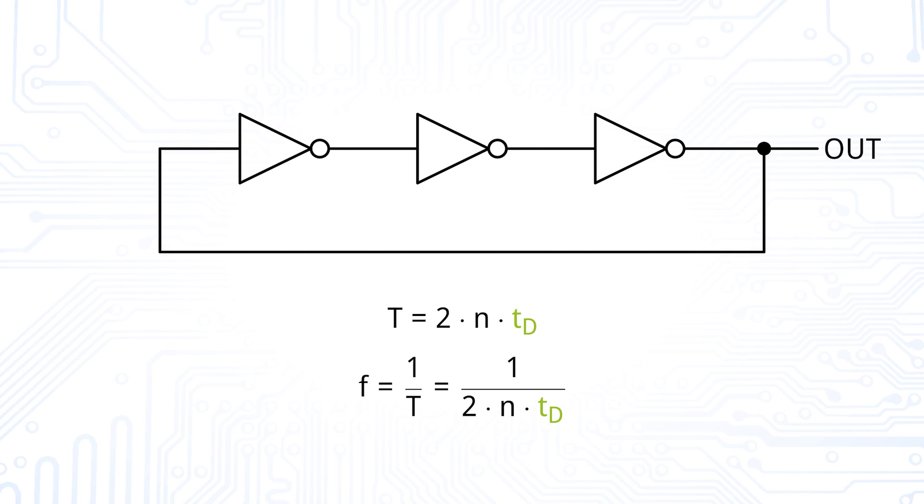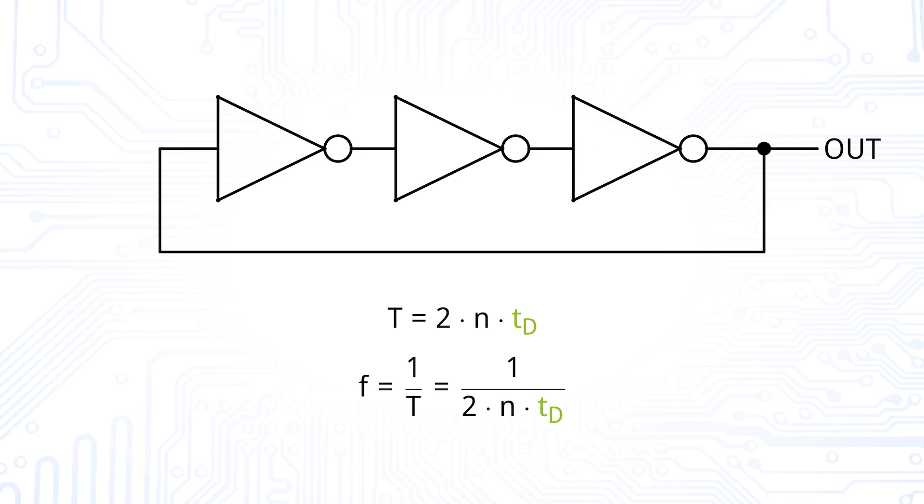In general, we can see the inverter chain as RC low-pass filters that originate from the transistor's on-resistance and the input capacitance of the subsequent inverter. Firstly, we could make the width of the inverter structure larger, which decreases the on-resistance and therefore decreases the delay time.